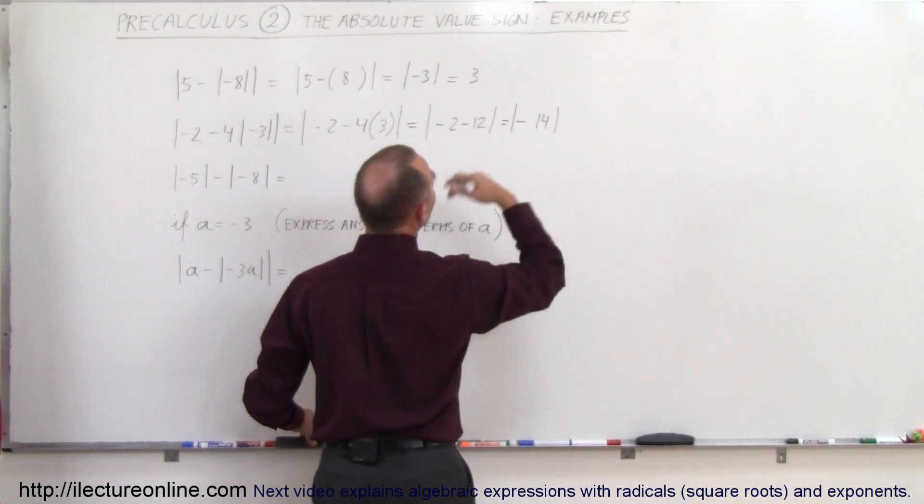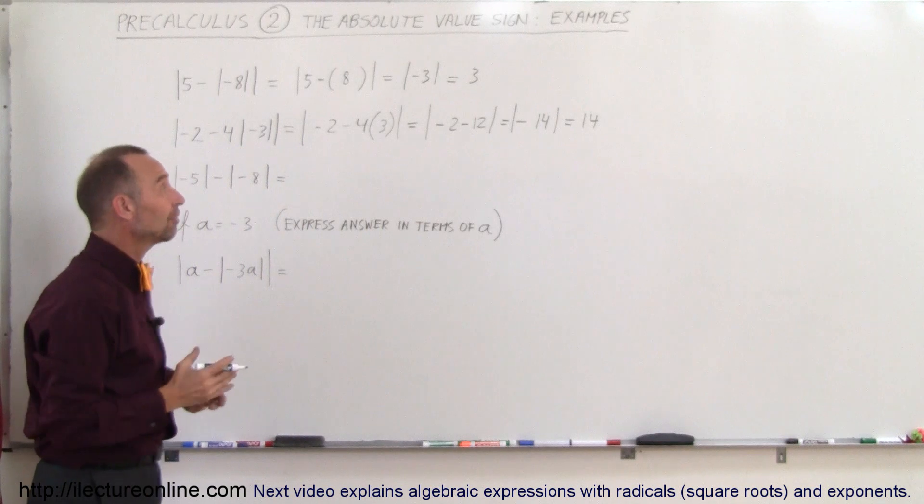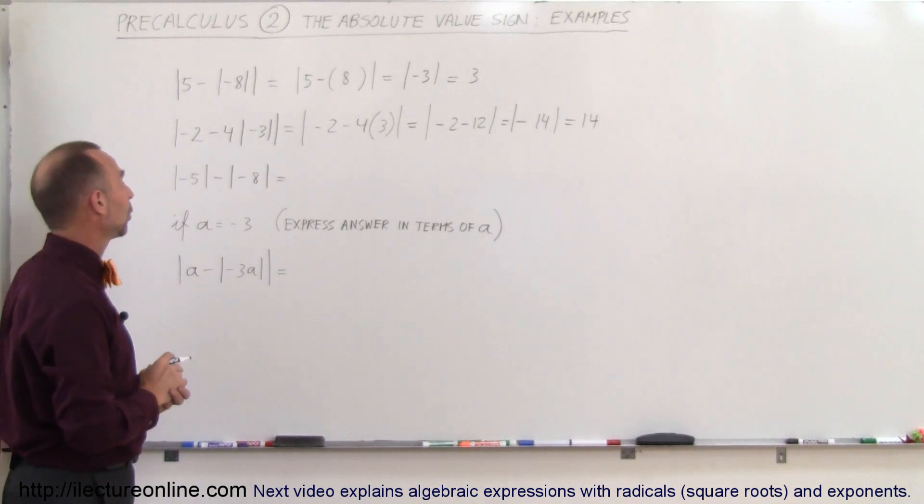Because I want to combine those first, and then this equals a positive 14, because that's what we mean by the absolute value—it's only the positive value of that quantity.